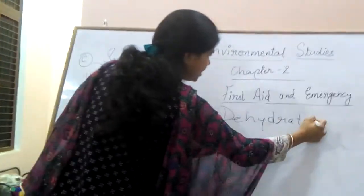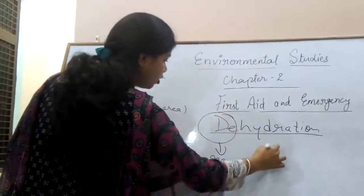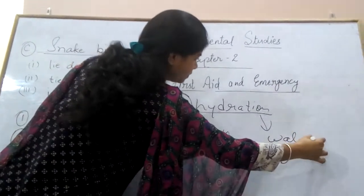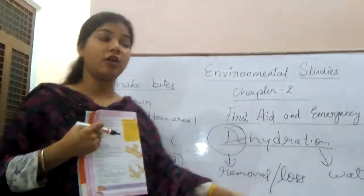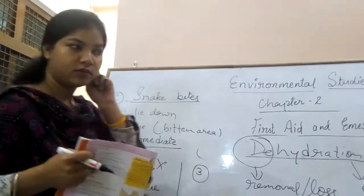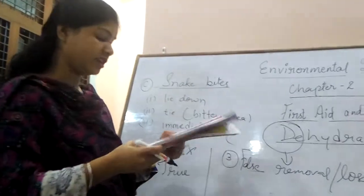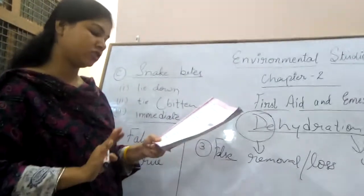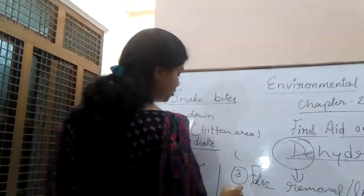The meaning of dehydration: 'de' means removal or loss, and 'hydration' means water. So in case of loss of water, we should drink plenty of water. Therefore, the statement 'one should not drink water in case of dehydration' is false. In case of insect bites, we should wash the area with soap and water — that is true.